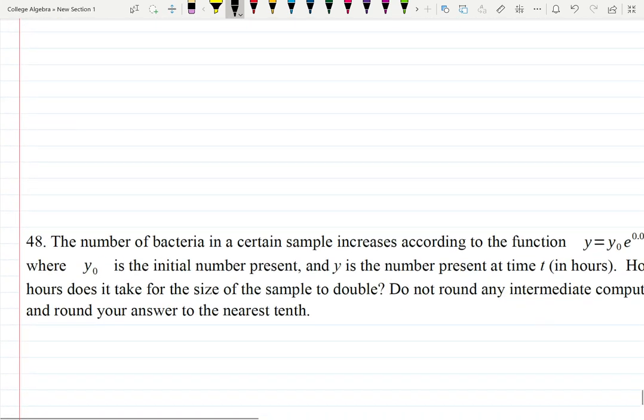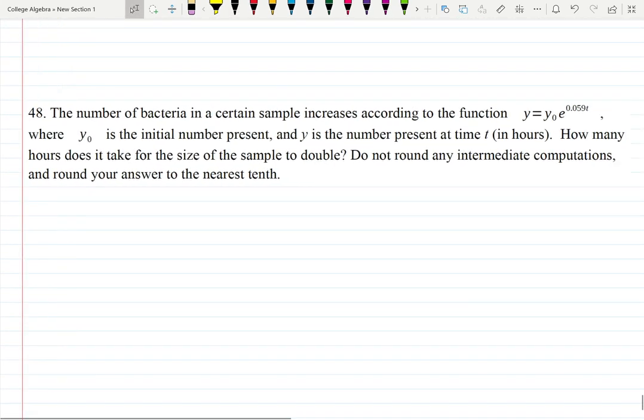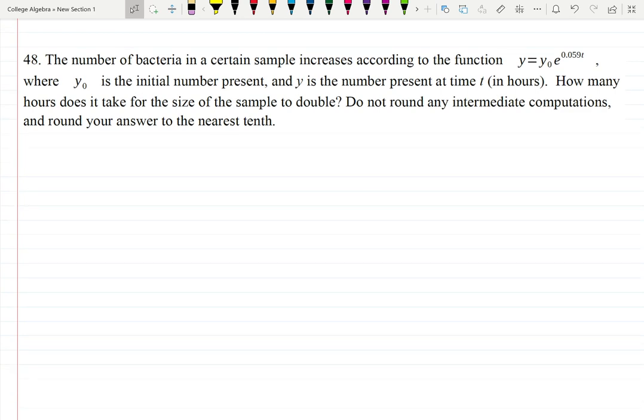Last example. Last example says that we are looking at the bacteria in a certain sample increasing according to the given function. And here's the exponential increase of the bacteria population. y sub zero is the initial number. That's always like that—whatever is here is called initial value. I mentioned it in one of my videos.